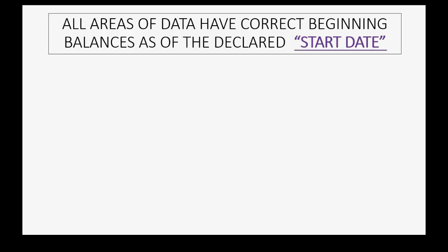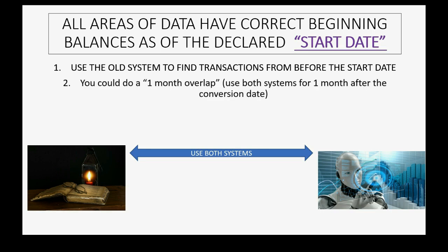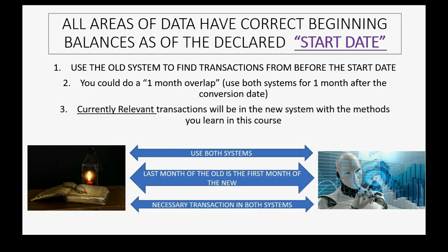Don't worry about using two different systems. You'll use the old system to find transactions before the start date, but what you could do is what's called a one-month overlap. This means use both systems for one month after the conversion date, and then this way you know for sure that all of the currently relevant transactions will be in the new system. But even if you don't use a one-month overlap, we're still going to show you what currently relevant transactions are and how you need to put them into the new system.